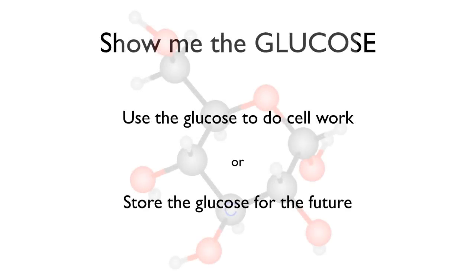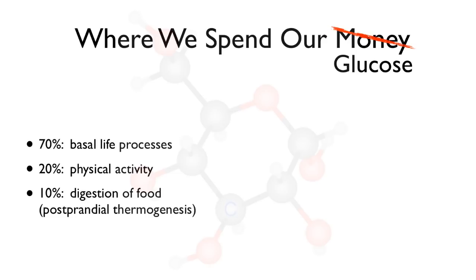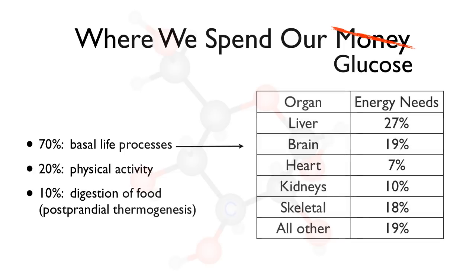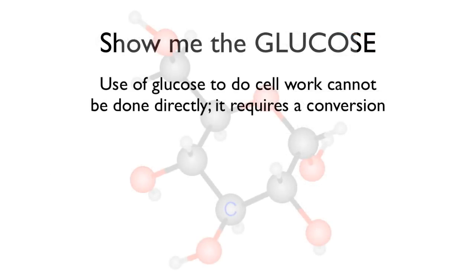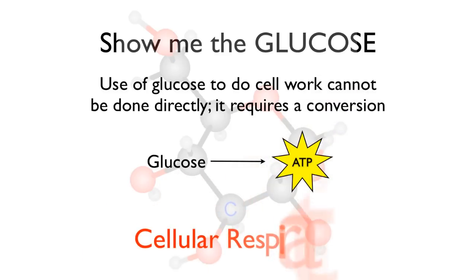Either way, you're going to use the glucose to do cell work, or you're going to store the glucose for the future. About 70% is just to stay alive. A lot of people are surprised that the liver has a bigger energy demand than the brain does. We've got physical activity, and then digestion of the food itself also requires glucose. The use of glucose doesn't directly fuel cell processes — you need to convert it into something else first. You take the glucose, run it through a series of reactions, and convert it into ATP, and that's what cellular respiration is.